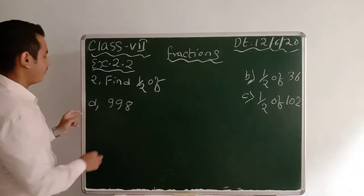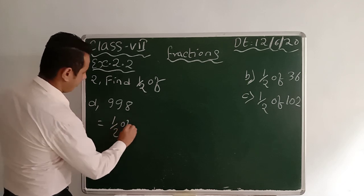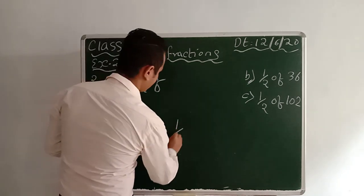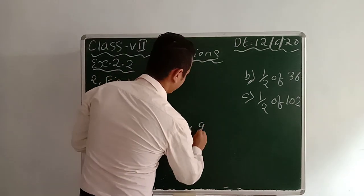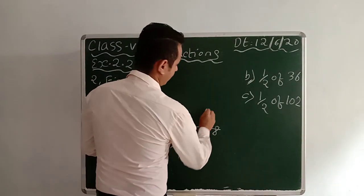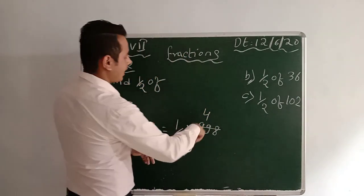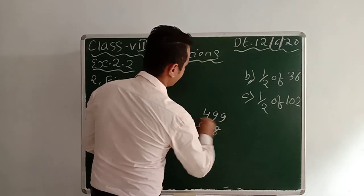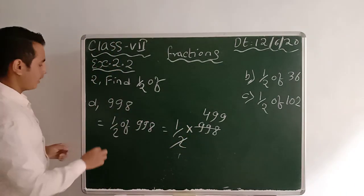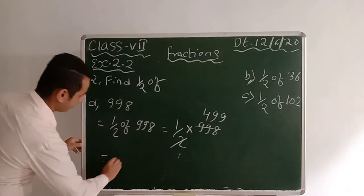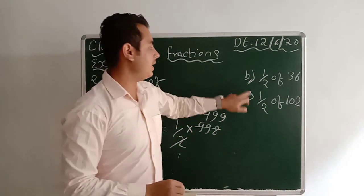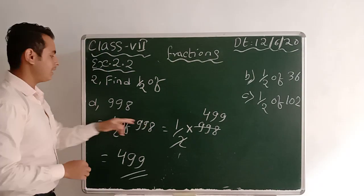I am doing number D: half of 998, which equals 1/2 into 998. So 998 divided by 2: two 4s are 8, two 9s are 18, two 9s are 18. So 998 divided by 2 gives you 499. Your answer will be 499. B and C you should do by yourself, the same way.